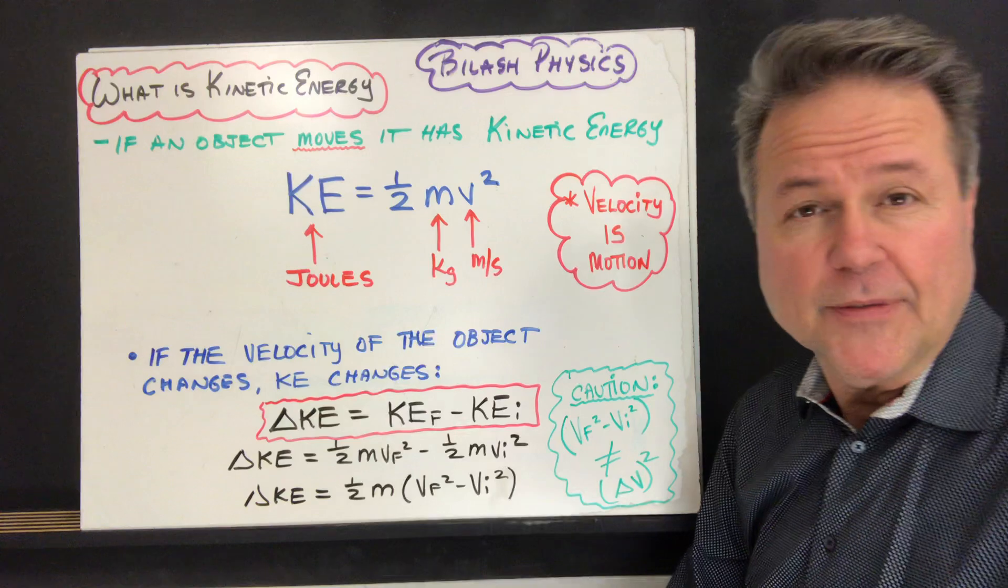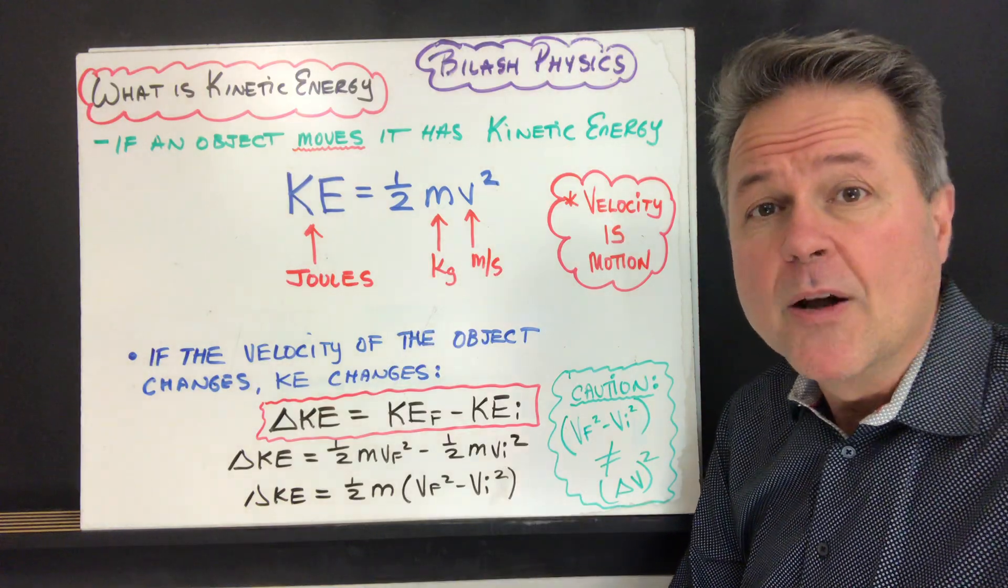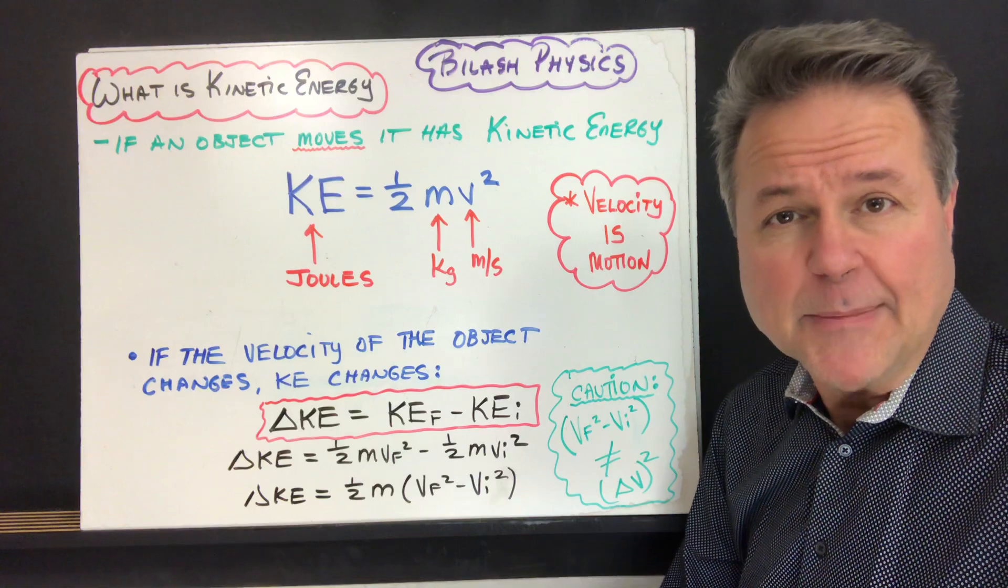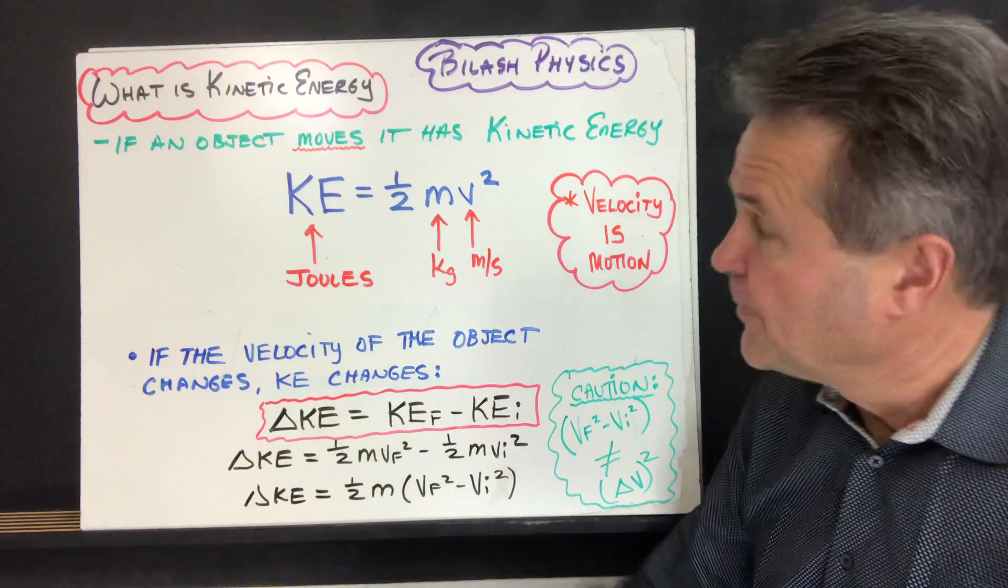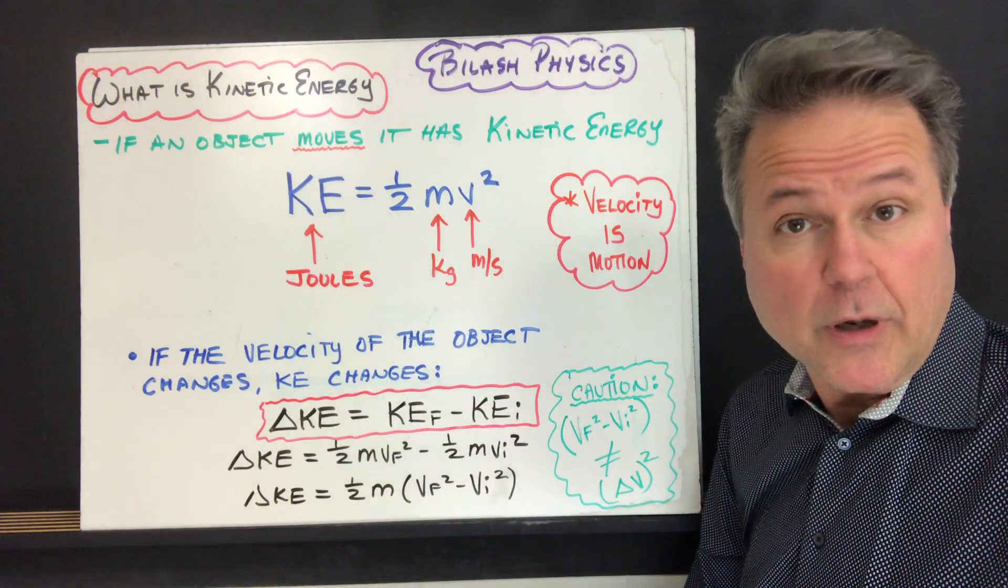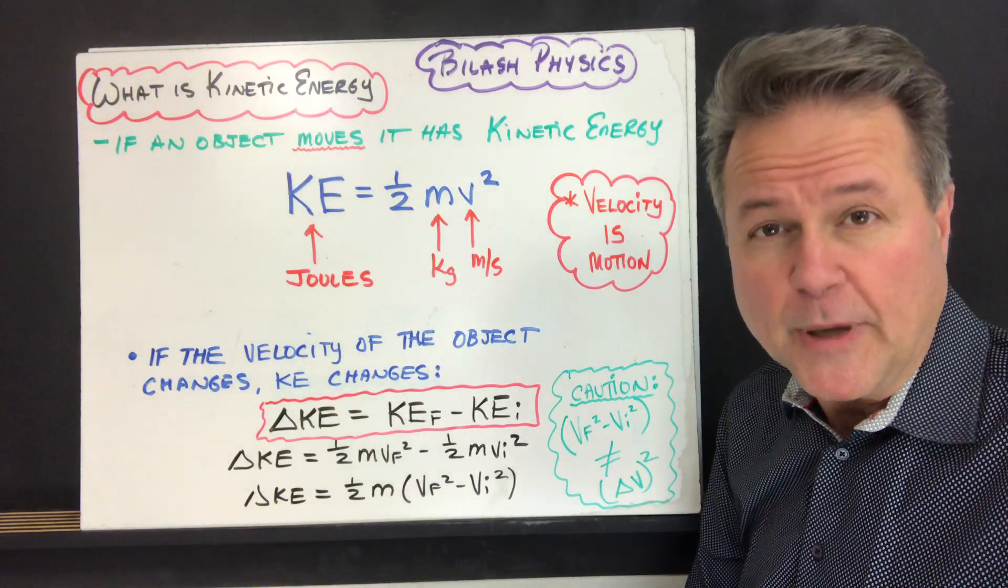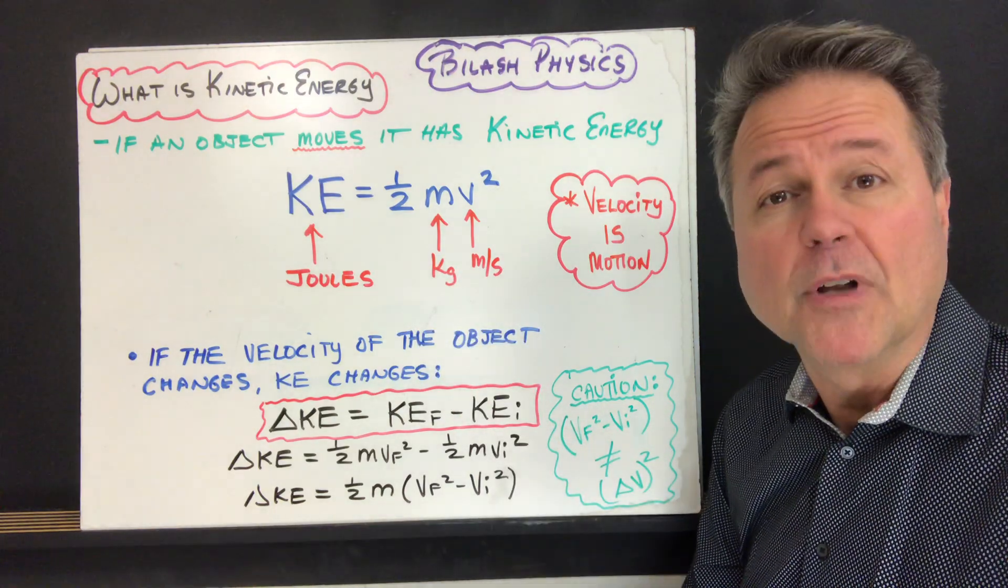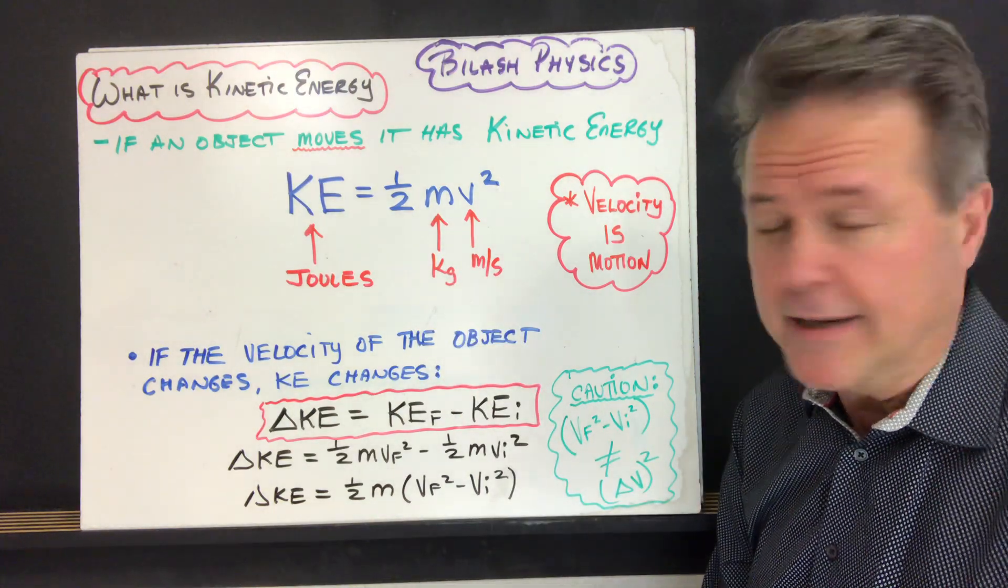We can calculate the kinetic energy of an object using that formula where kinetic energy is equal to the product of one half times mass velocity squared. The kinetic energy is measured in joules just like work. Work and energy, they're both measured in joules. And mass is measured in kilograms and velocity is measured in meters per second.